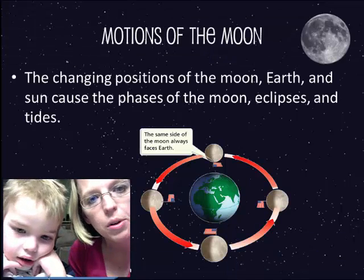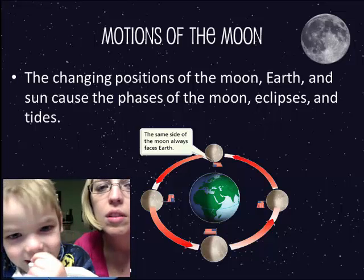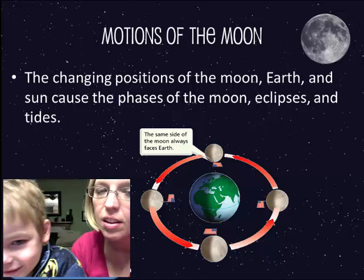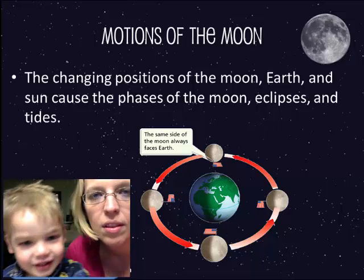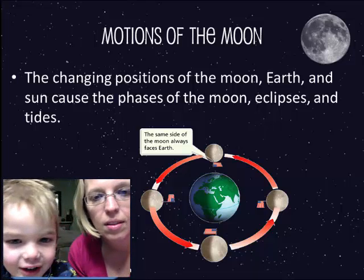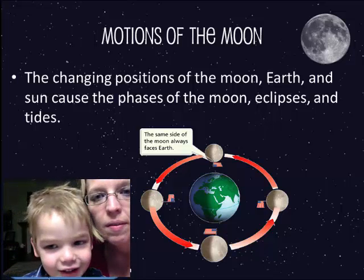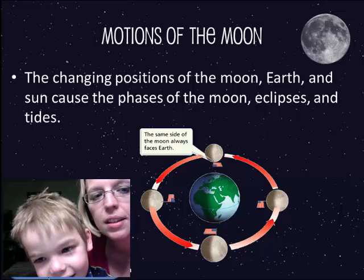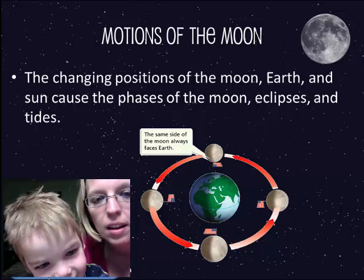Okay, Motions of the Moon. The changing positions of the Moon, Earth, and Sun cause the phases of the moon, eclipses, and tides.